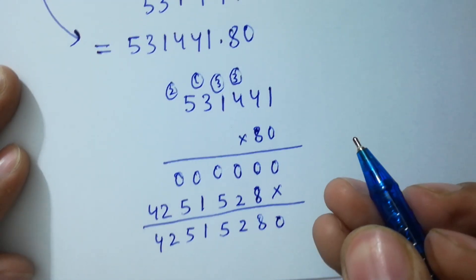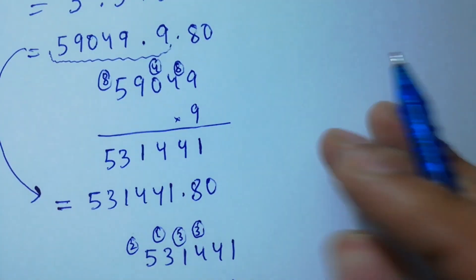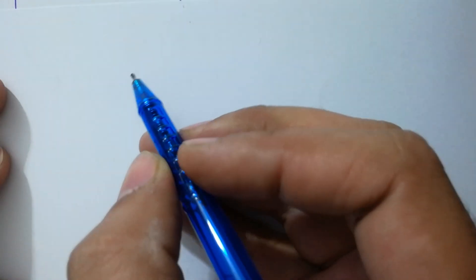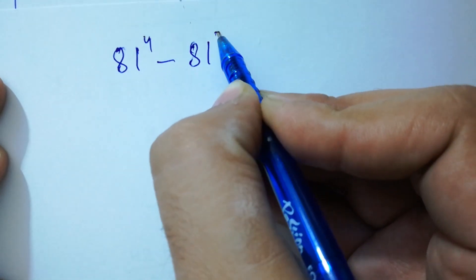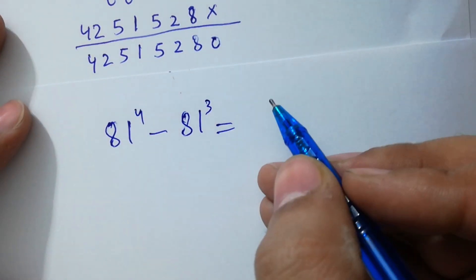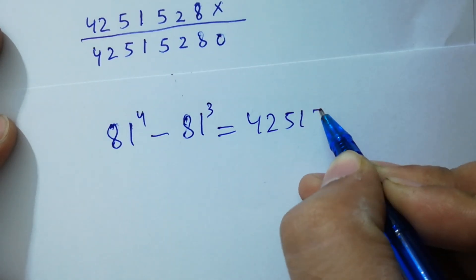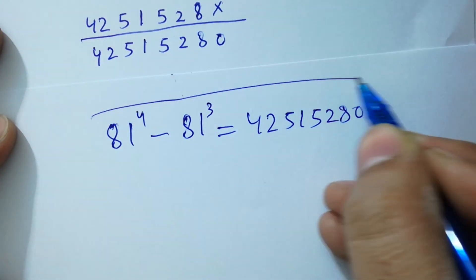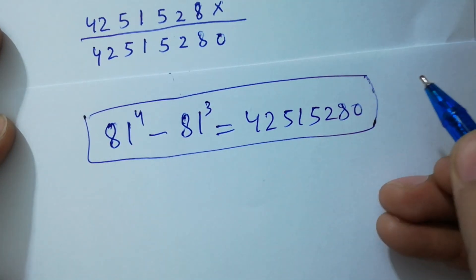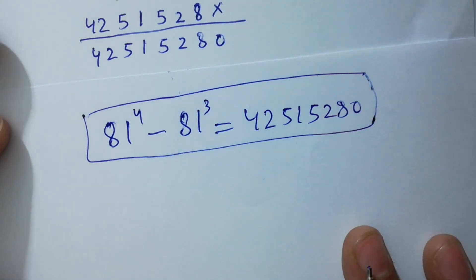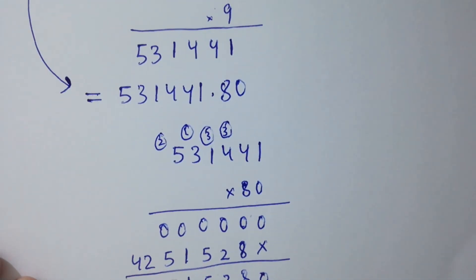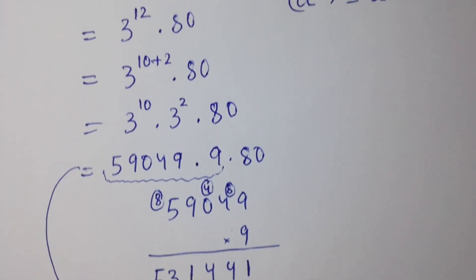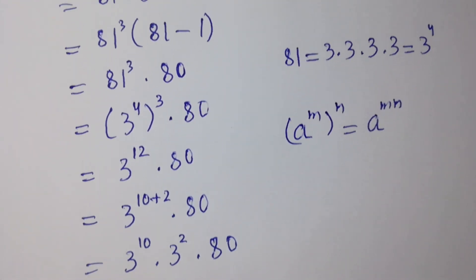So finally, 81 to the power 4 minus 81 cubed equals 42,515,280, which is our final answer without using any calculator. Thanks for watching this video. Please subscribe to this channel to get notifications of new videos, and don't forget to share these videos with your classmates and friends so they can benefit too.